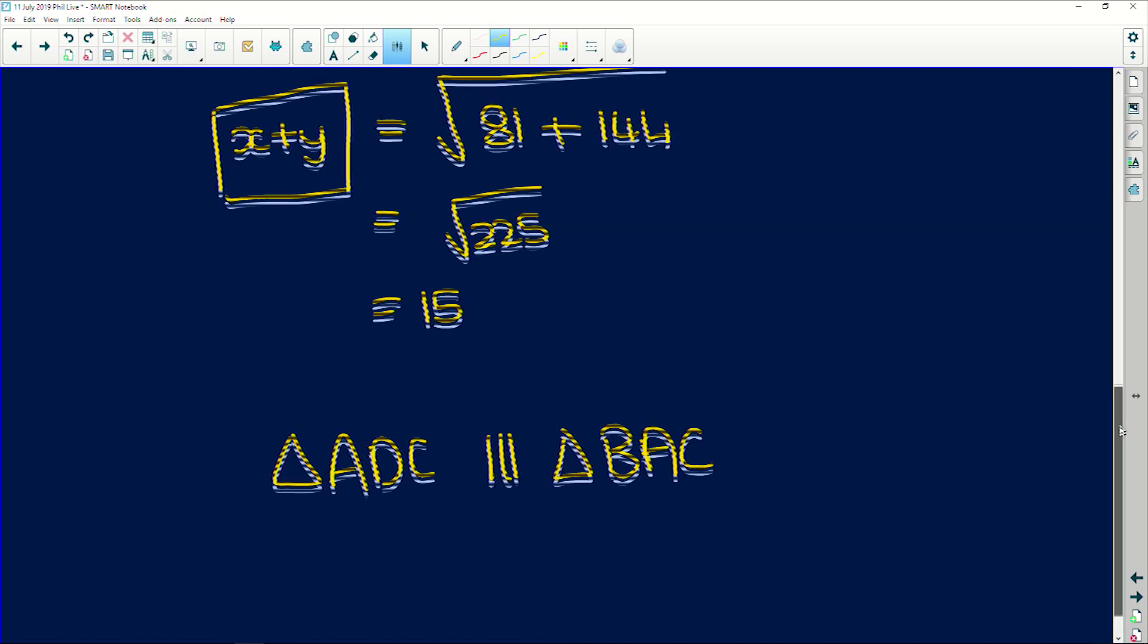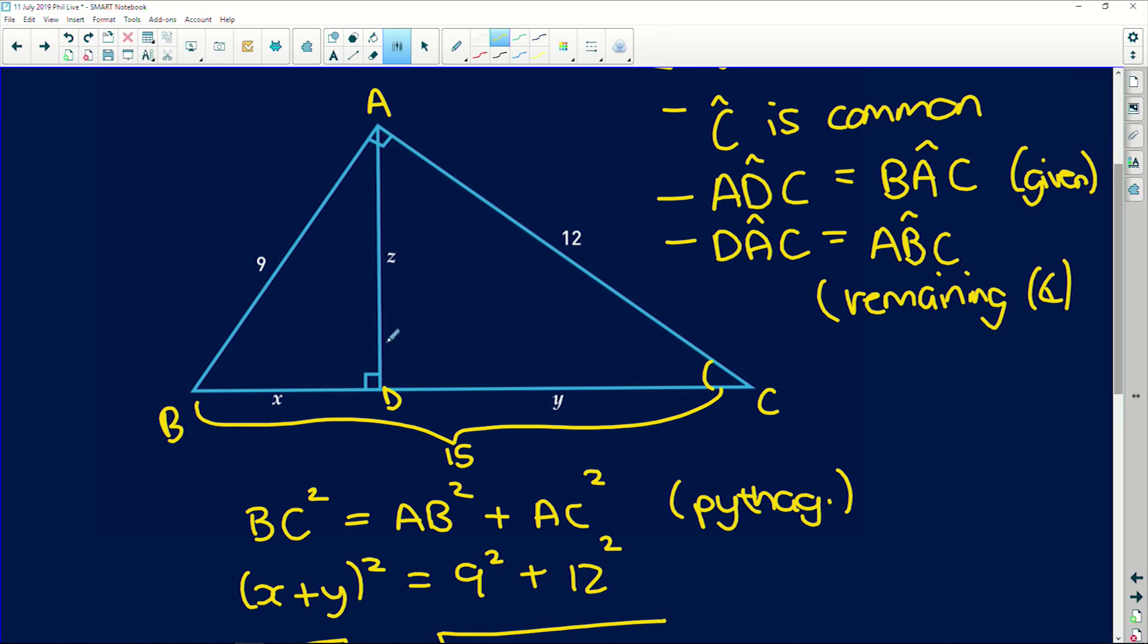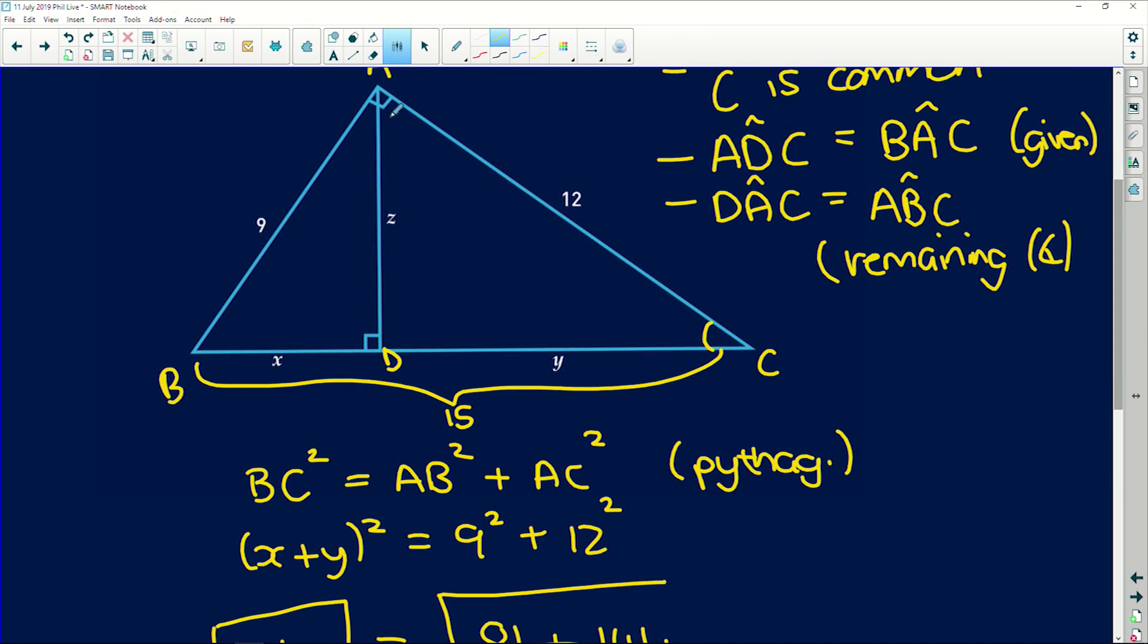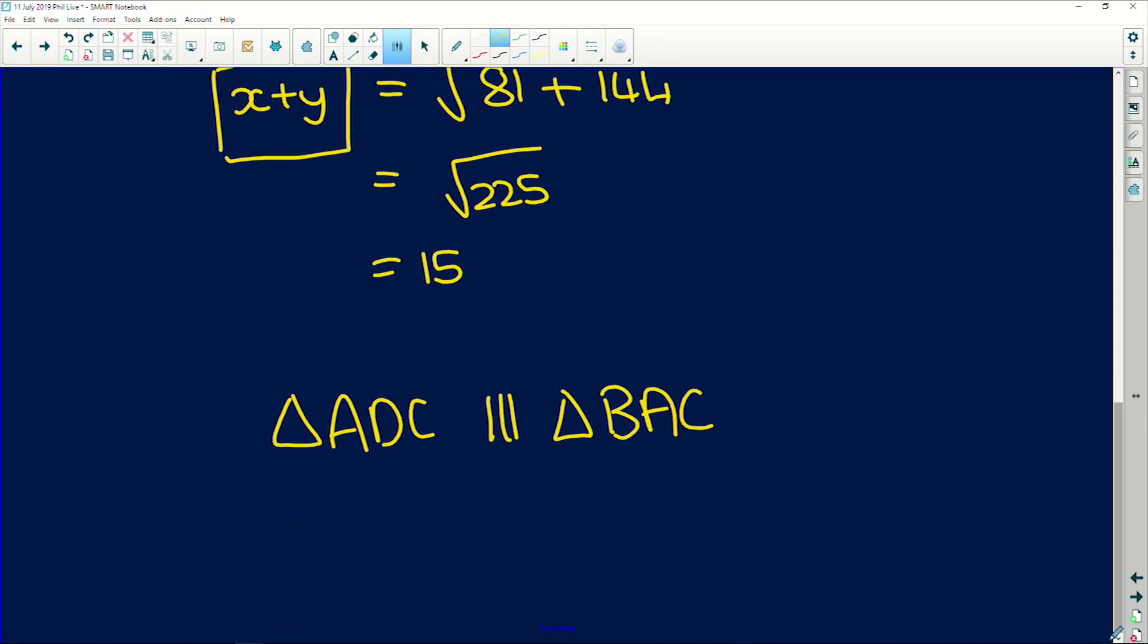Now we're trying to find an expression for z, which is AD. So if I use AD over its hypotenuse, which is AC. So we get AD over AC. This curve over this curve is equal to the same curve BA over the same curve BC. Okay.